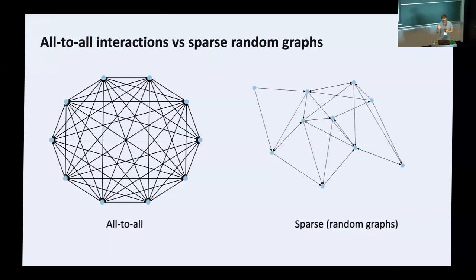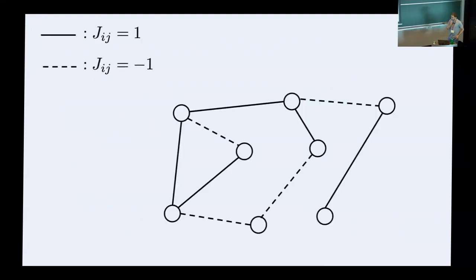Let me start with the paradigmatic model in complex systems theory: the spin glass model. I'll discuss what is known in the case of all-to-all interactions, and then discuss dynamical systems. The spin glass problem is very fruitful — much of the methods in complex systems theory were developed using this model. This was also the first model I studied in my PhD.